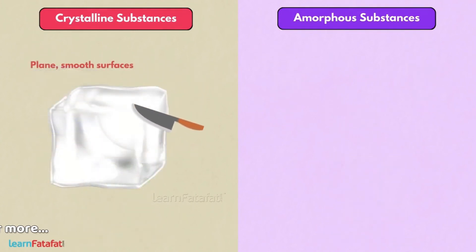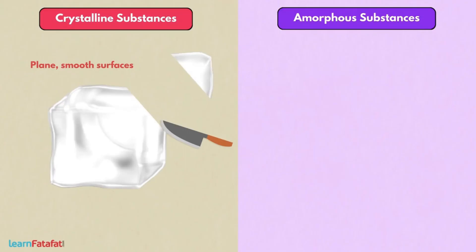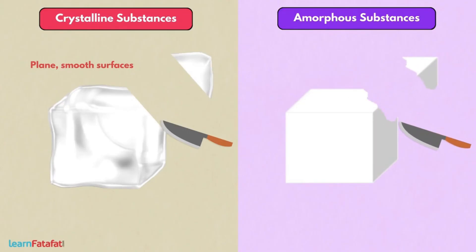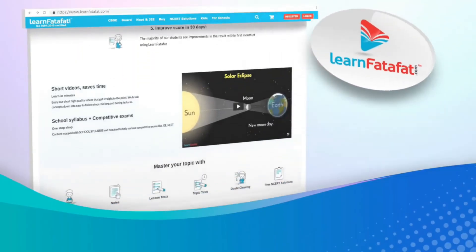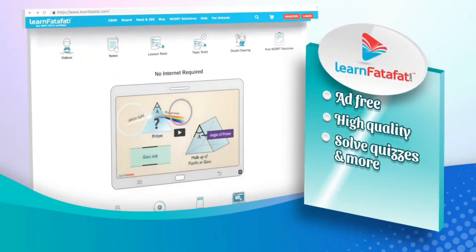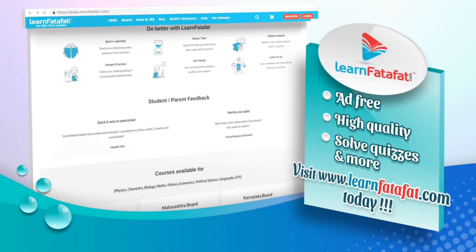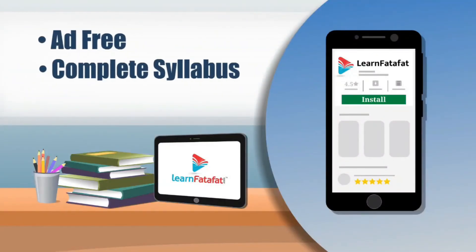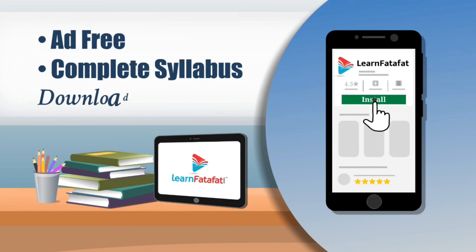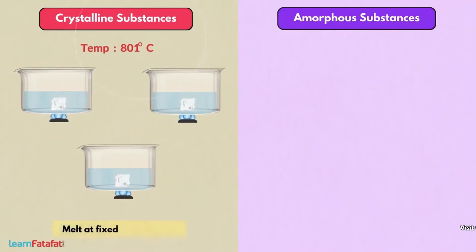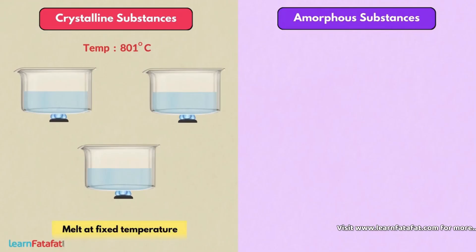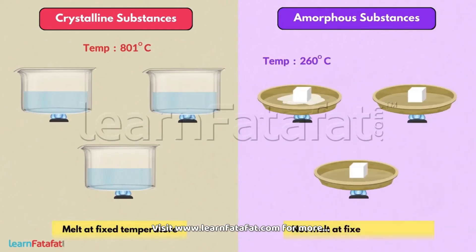If we cut a crystalline substance, it forms a plain, smooth surface. However, there is no smooth cut in an amorphous substance, so its surfaces are not smooth. Amorphous substances also do not melt at the same temperature.